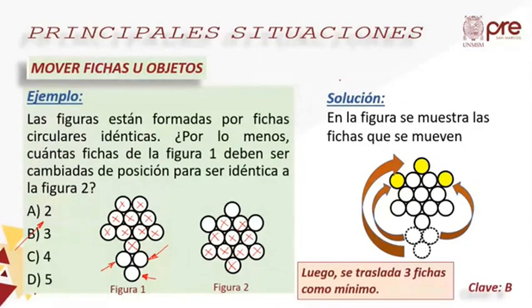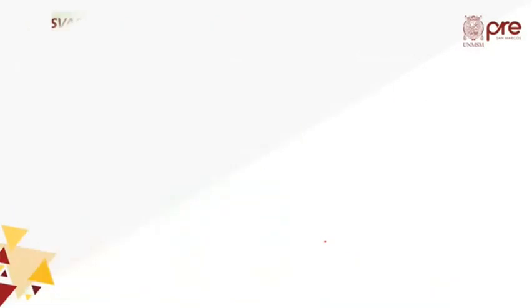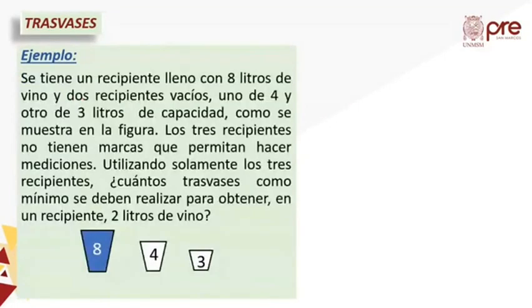Si quiero mover la menor cantidad de fichas para obtener de la figura 1 la figura número 2, debería mantener la máxima cantidad de fichas posibles en su misma posición. Buscando, acá aparece 1, 2, 3, 4 fichas que coinciden. Esas 4 coinciden con la figura 2 y encima se puede construir un pequeño trapecio conformado por un total de 9 fichas que aparecen en la figura número 2.